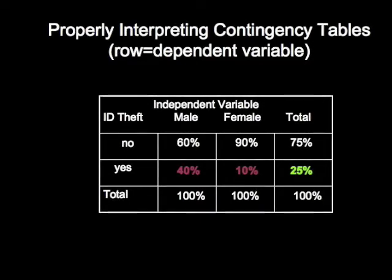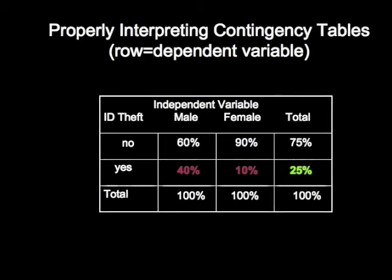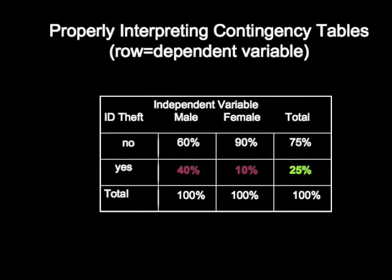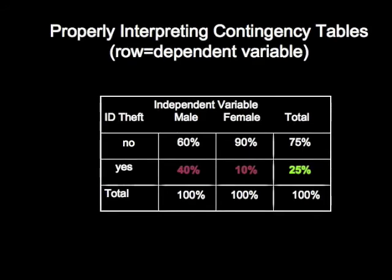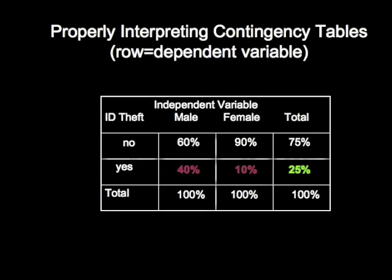You also need to interpret the joint cell frequencies or relative proportions in those cells, which in this particular example indicate that 40% of men were a victim of identity theft versus only 10% of females. The proper interpretation of this table is that about a quarter of the people in the sample were victims of identity theft, and men were more likely than women to be a victim of that kind of crime. That's the proper interpretation of this table.